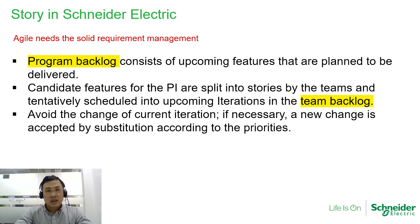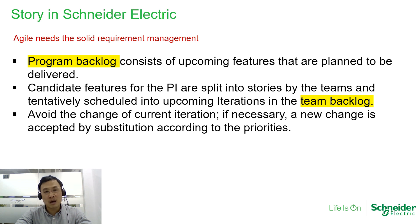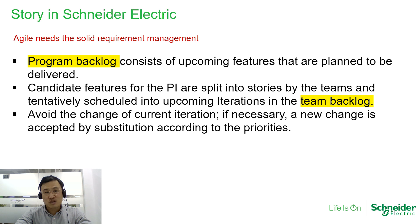At Schneider, Agile needs solid requirement management. The program backlog consists of upcoming features planned to be delivered. Candidate features for the PI are split into stories by teams and tentatively scheduled into coming iterations in the team backlog. We try to avoid changes to the current iteration. If rarely necessary, a new change is accepted by substitution according to priorities. Normally, we do not recommend changes during iterations — changes will be planned and considered in the next iteration planning.